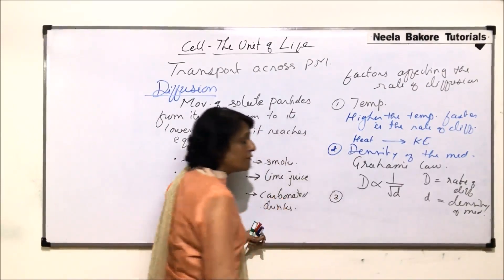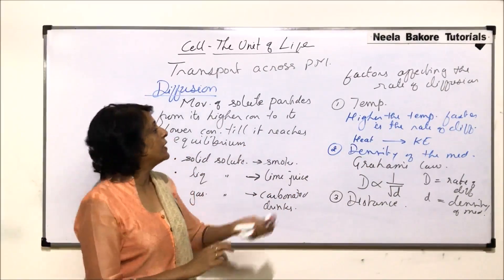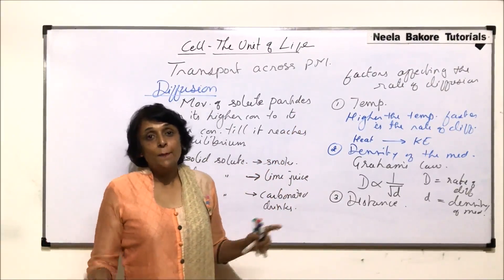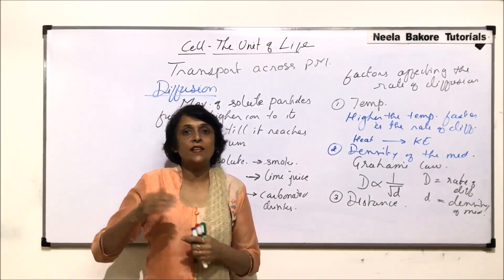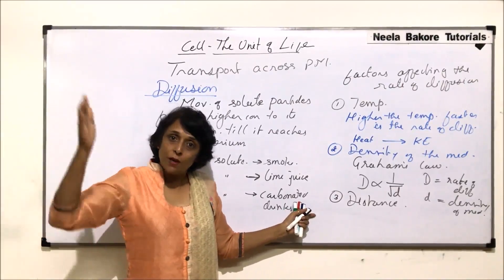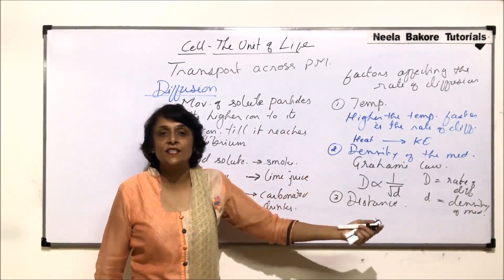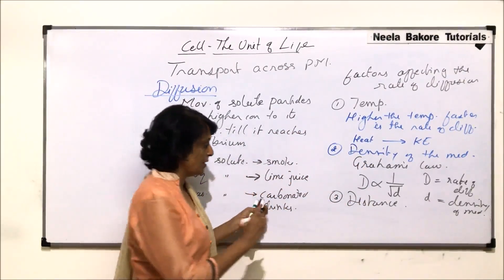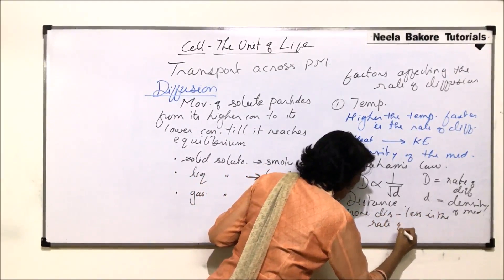The third factor is distance. When food is cooked in the kitchen we can smell it, but neighbors cooking far away — we don't smell their food because the particles don't travel very far. Particles will move, but the person in that house smells it while we at a distance do not. So more the distance, less is the rate of diffusion.